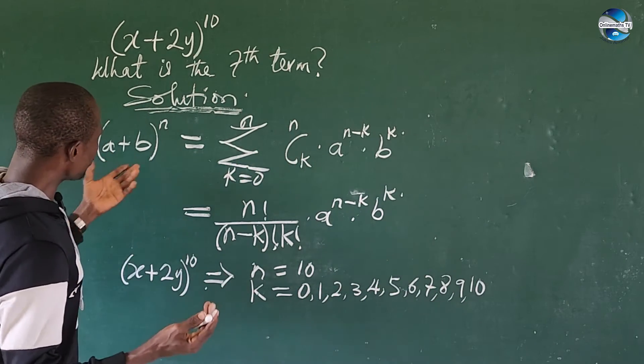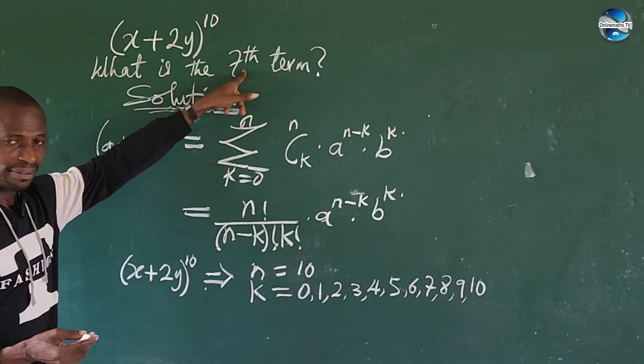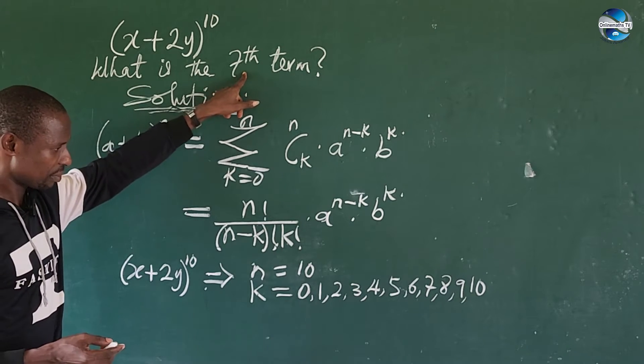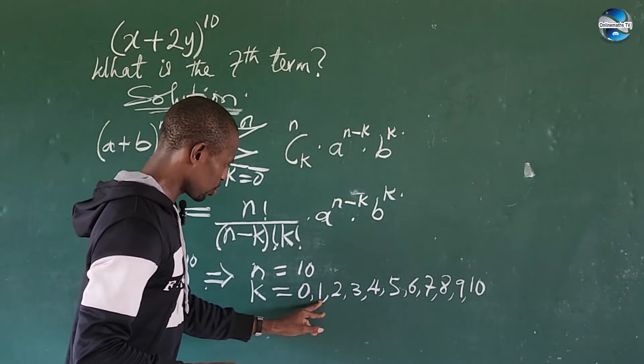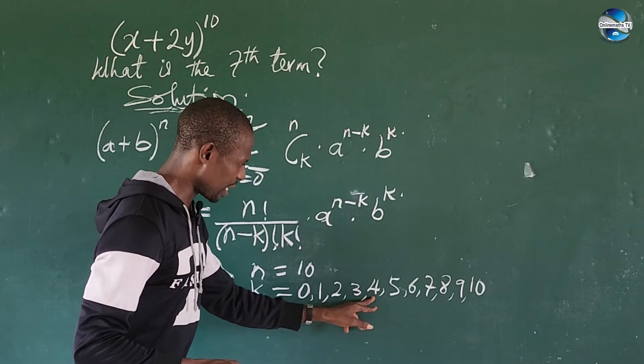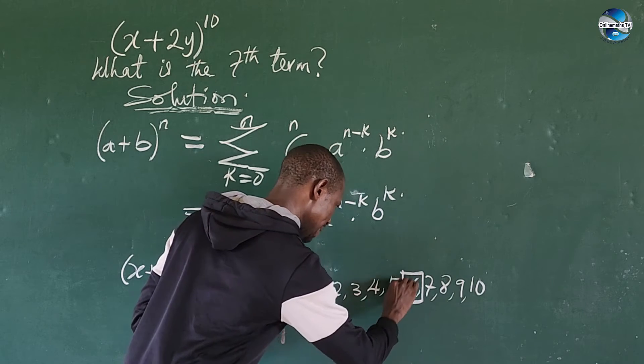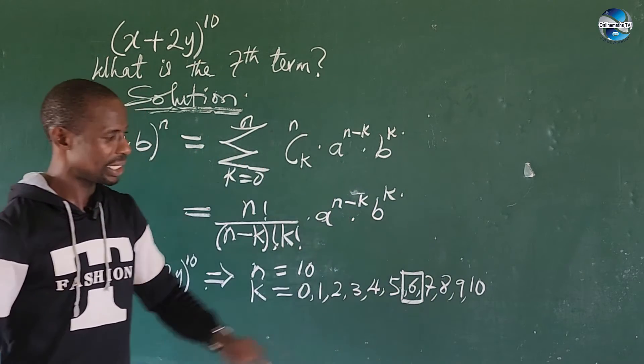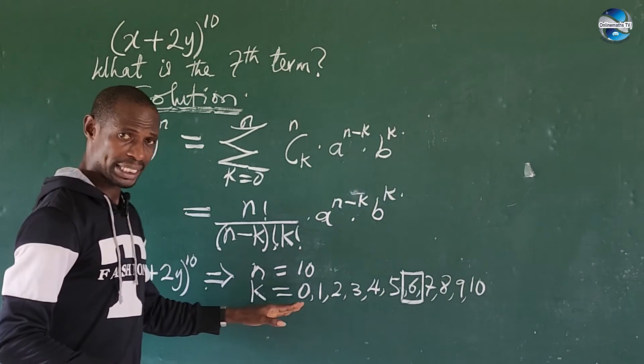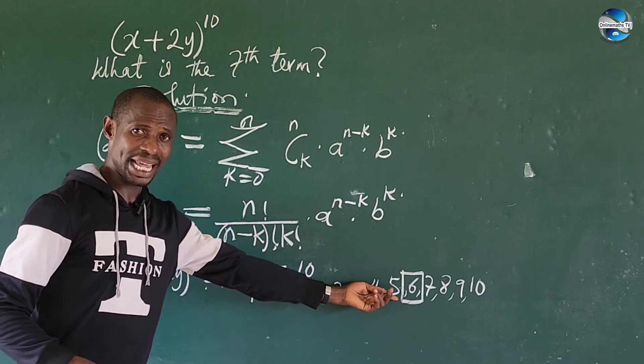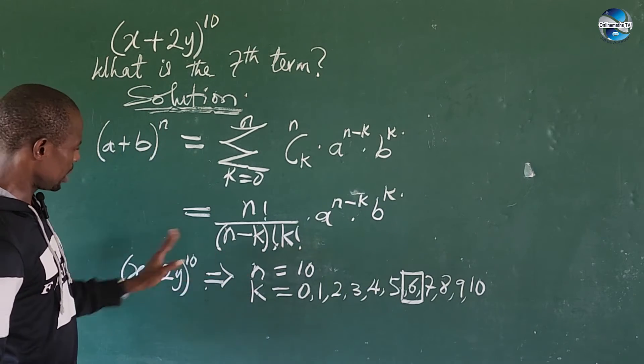What are we looking for? We are looking for the seventh term. So how do we get the seventh term of this expression? So we count here 1, 2, 3, 4, 5, 6, 7. So look at what our k will be. So this is the seventh term in this expansion. So k is equal to 6 from this expression.